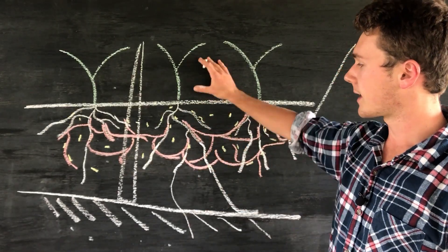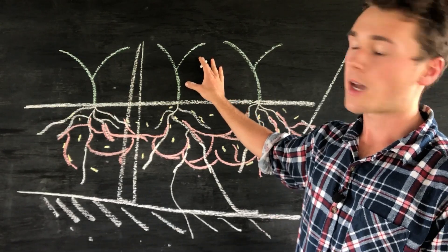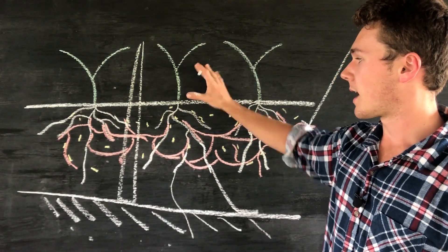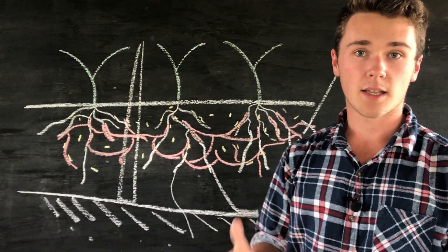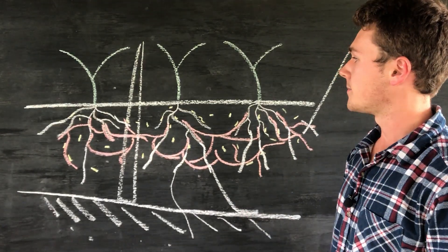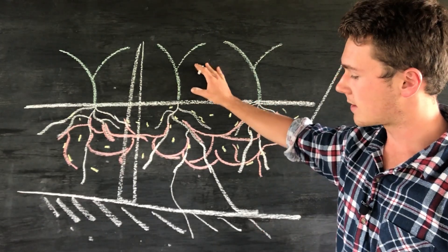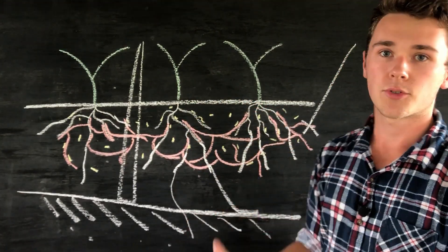Now this is less of a problem with annual grasses because their root systems won't go down as far as perennials. If you're in a pasture or grazing system, you really want to be able to access these deeper nutrients.